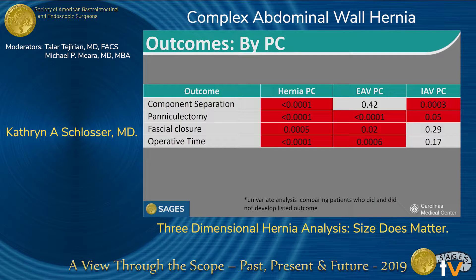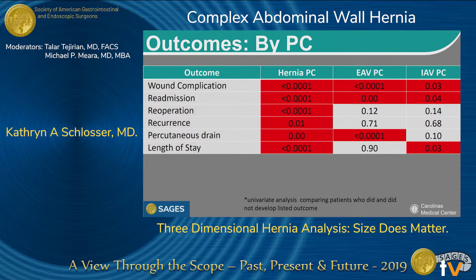We first performed a univariate analysis associating these principal component variables with outcomes of interest. Looking at operative intervention, we found that Hernia PC, which consists primarily of hernia dimensions, was associated with component separation, paniculectomy, fascial closure, and operative time. When we examined outcomes, Hernia PC was most consistently associated with all outcomes of interest. Extra-abdominal volume and intra-abdominal volume PC were associated with wound complication and readmission, but not with most of the other outcomes.